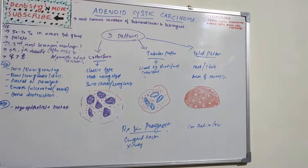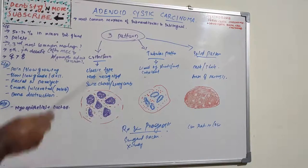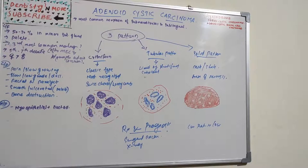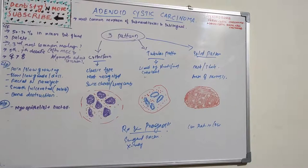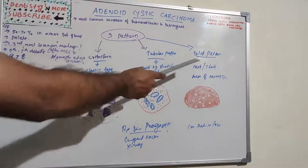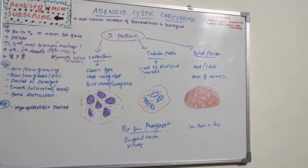In the tubular pattern, there are tubular structures lined by stratified cuboidal epithelium. In longitudinal section, these ductile structures are viewed as ducts or tubules, which is why it is called the tubular pattern. The tubular lumen can be lined by one or more layers of cells.